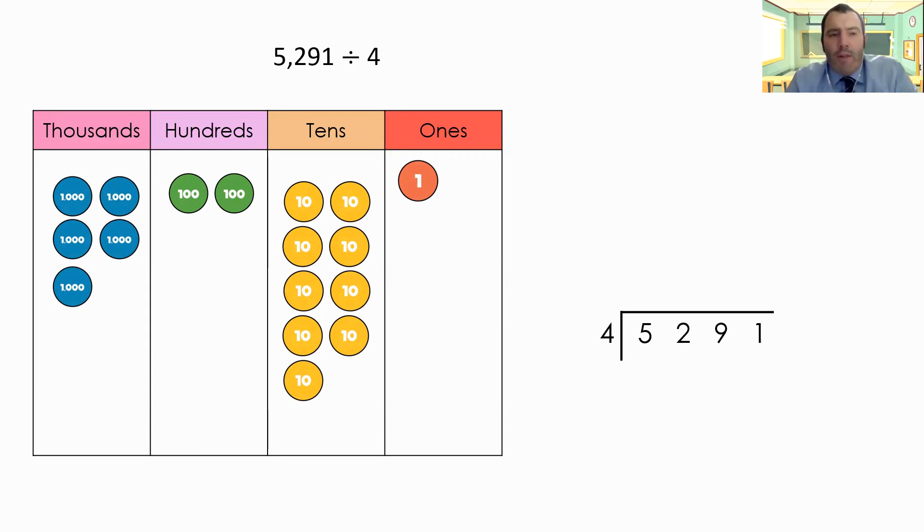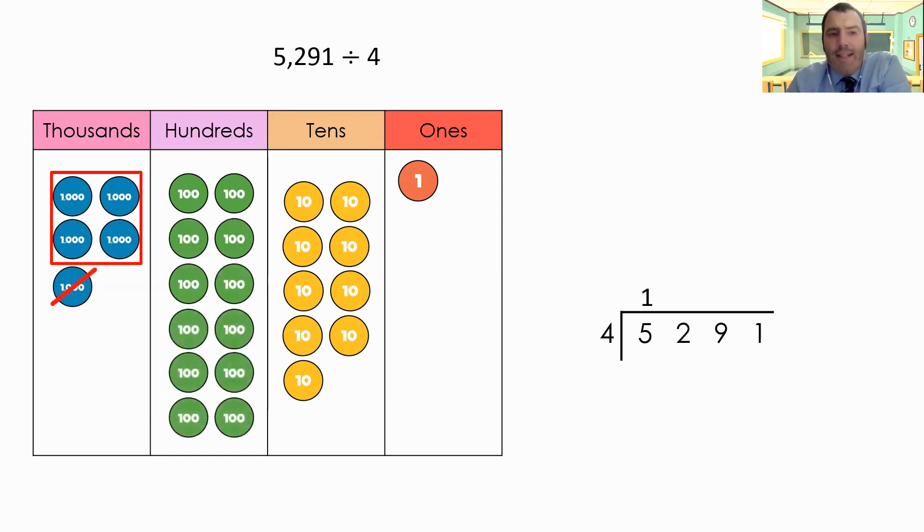So starting with our thousands, I've got one lot of four. I haven't got another lot of four. I've only got one. So above the five in my calculation, I'm going to write one. I need to exchange the 1,000 into my hundreds. So I'm going to exchange my 1,000 into 10 hundreds. So I've now got 12 hundreds. So I need to note that in here as well in my written method on the side.